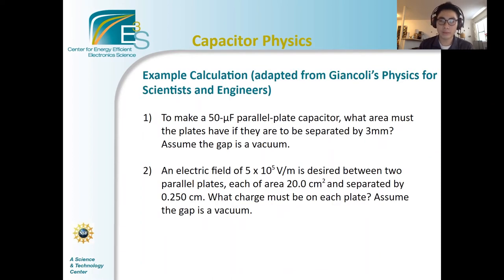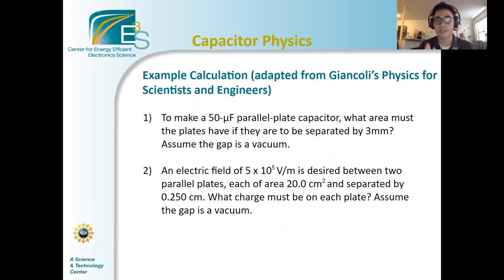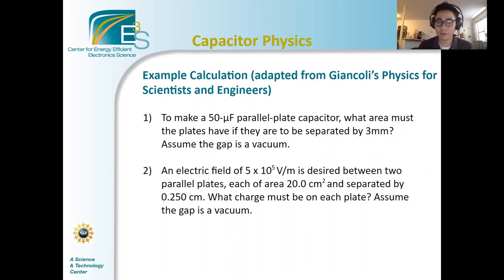Now we're going to do an example calculation. Here's an overview of the two problems adapted from Giancoli's Physics for Scientists and Engineers. The first question is: to make a 50 microfarad parallel plate capacitor, what area must the plates have if they are to be separated by three millimeters? Assume the gap is a vacuum. The second question is: an electric field of 5 times 10 to the 5 volts per meter is desired between two parallel plates, each of area 20 centimeters squared, separated by 0.250 centimeters. What charge must be on each plate? Assume the gap is a vacuum. We'll give you a couple minutes to try it yourself using the formulas from before, and then we'll work through the problems together.